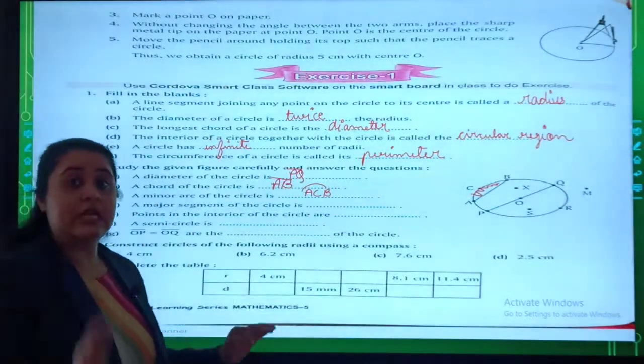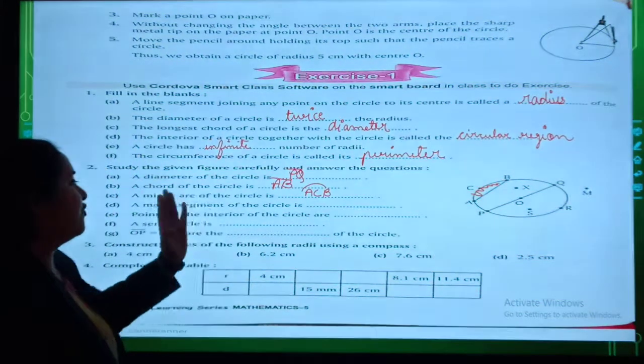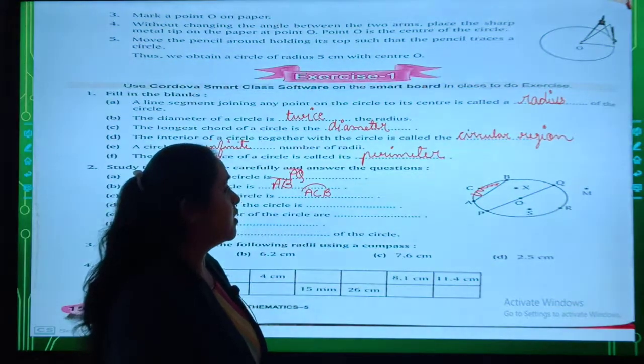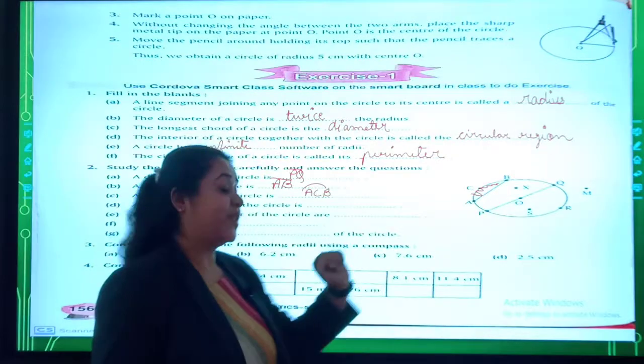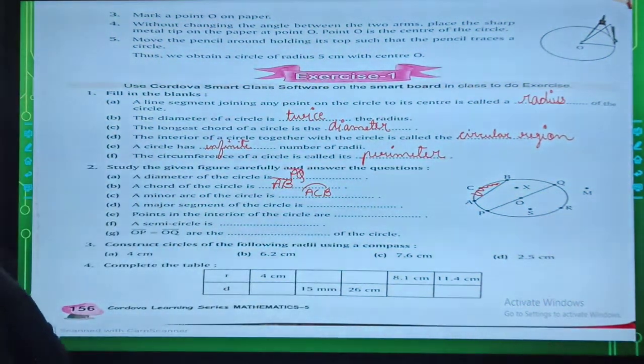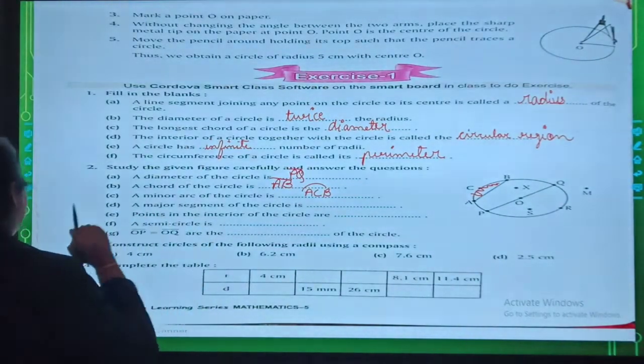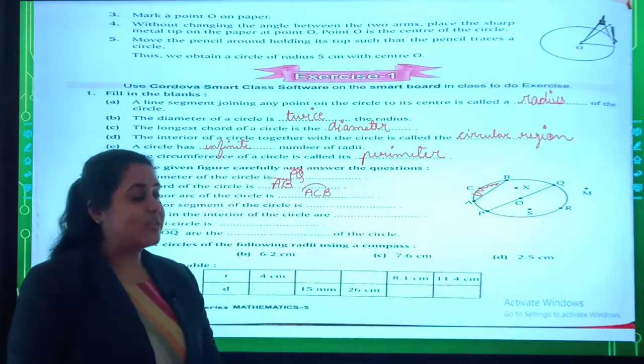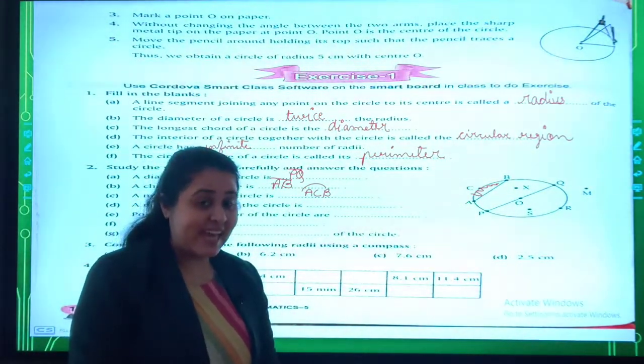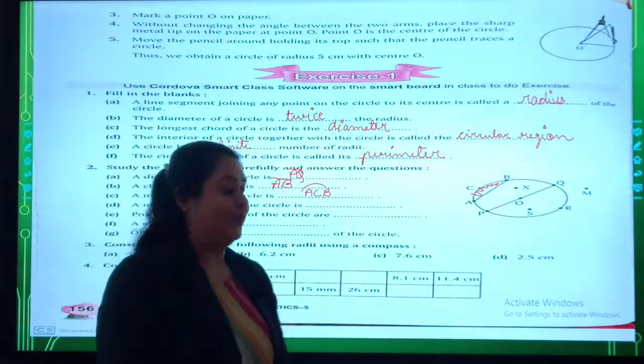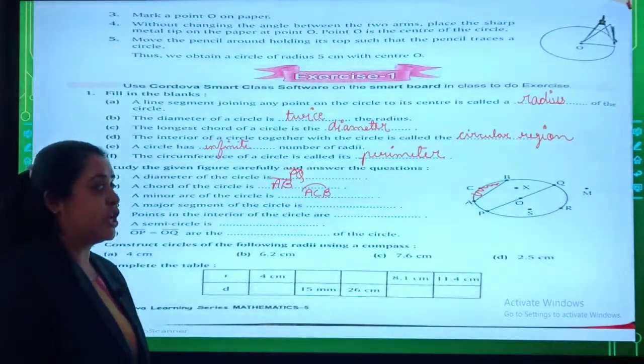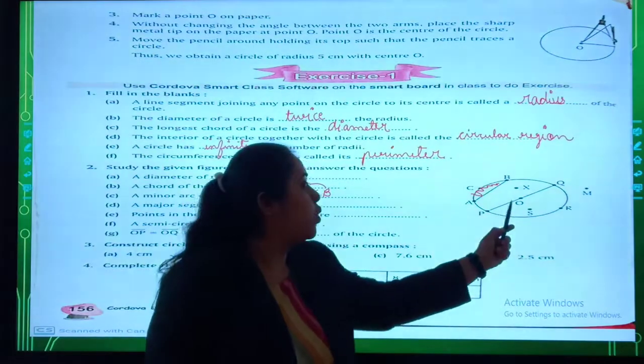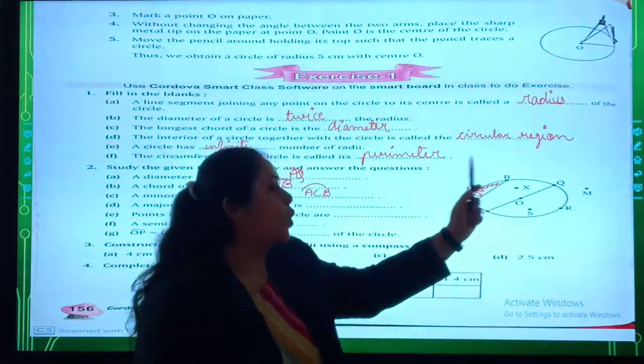Fourth, a major segment. Now in this case which is the major segment of the circle? The major segment will be PRQ. So students you can mark this on page number 156 of your textbook. The next one is point in the interior of a circle. The points in the interior are point X, point S, and point O. A semi-circle is dash. Which is the semi-circle? Say PRQO or it may be PRQB.